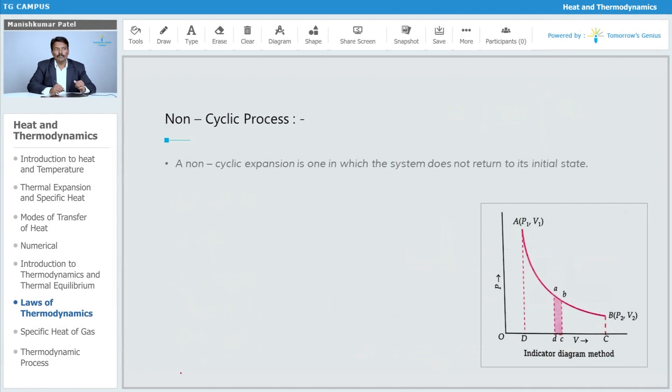Now, what is this non-cyclic process? In a non-cyclic process, the system does not return to its initial state. The initial state is A (P1, V1) and finally it reaches to B (P2, V2). This is a non-cyclic process.